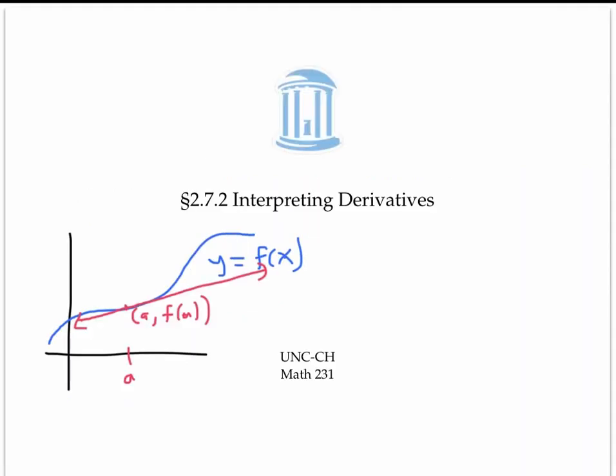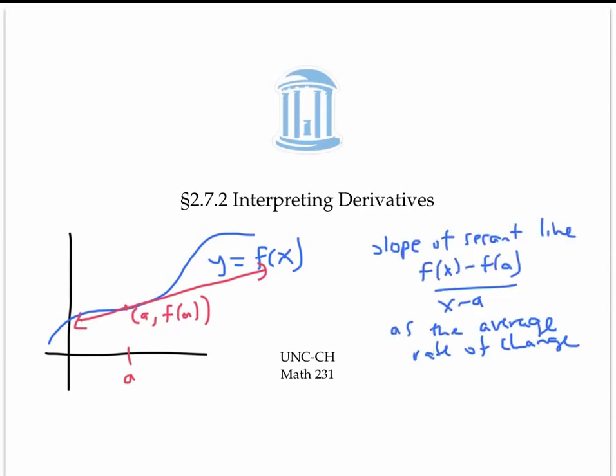In this video, we've interpreted the slope of the secant line as the average rate of change, and the slope of the tangent line, or the derivative, as an instantaneous rate of change. I hope that these general principles will help you interpret the derivative in a variety of contexts that you might encounter throughout your life.